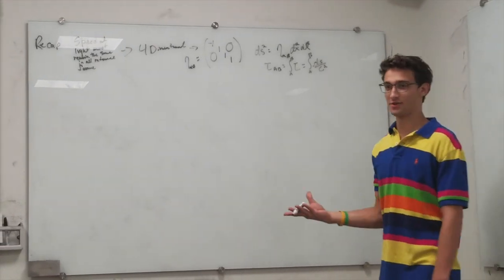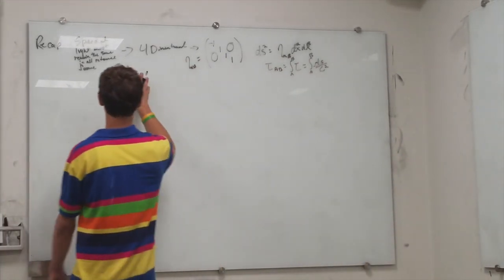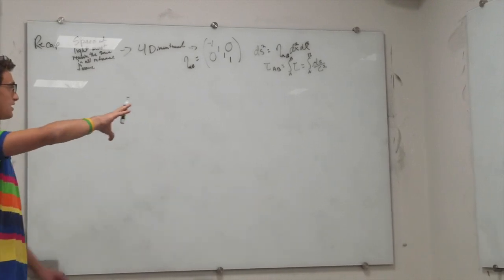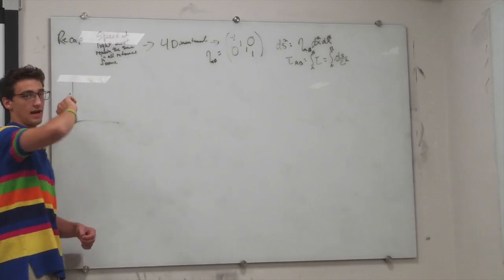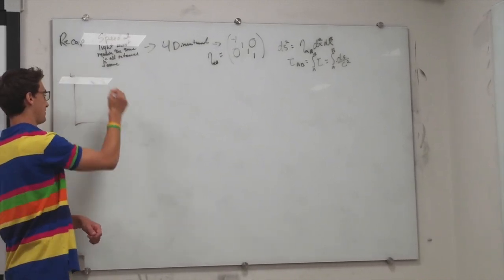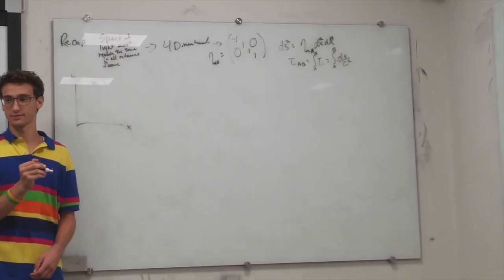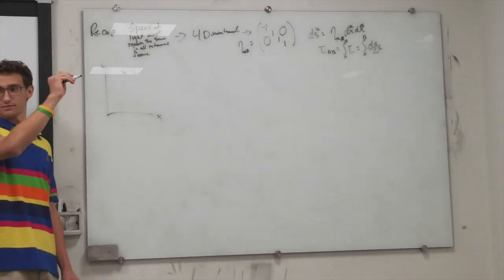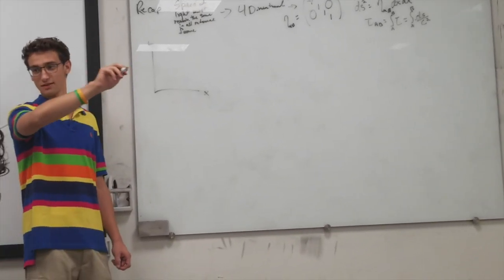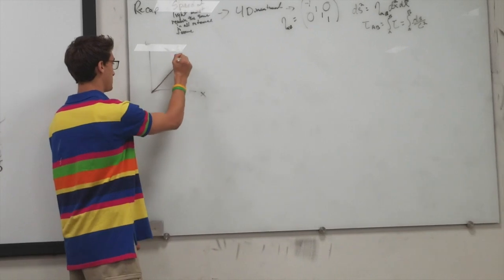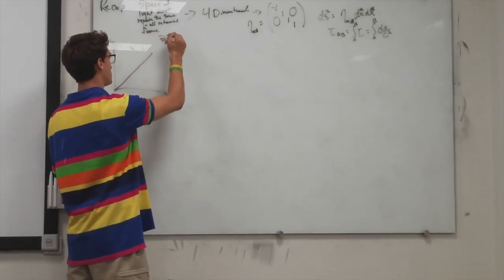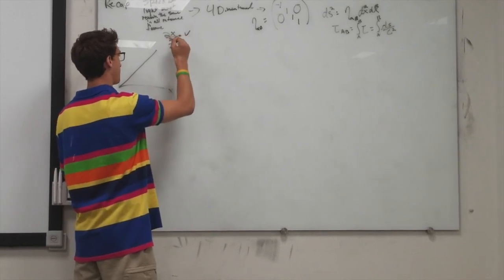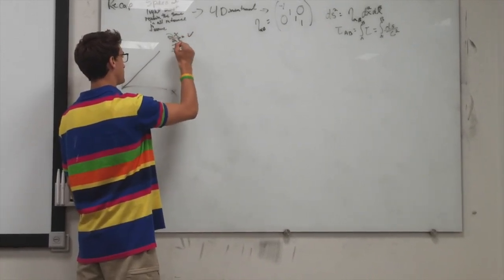In flat space there's no matter around, no gravity. If we throw a ball in outer space, what will happen? If this is a time axis and this is a space axis... yeah, it's just a straight line. So it travels with a constant velocity, but its acceleration, the time derivative of velocity, is zero.